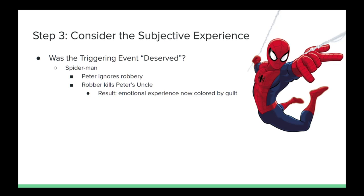In Spider-Man, Peter Parker is presented with a chance to use his powers to stop a robbery. He ignores the chance to do good and allows the crime to be committed. Later, he discovers that his beloved uncle has been shot and killed by the very same robber that he had let escape.